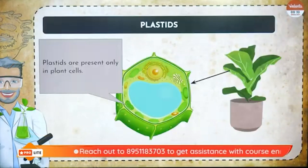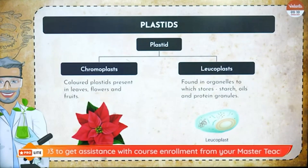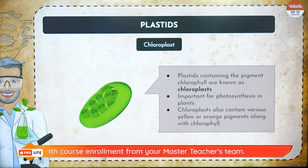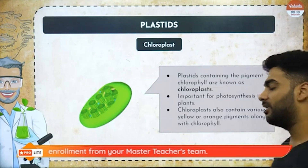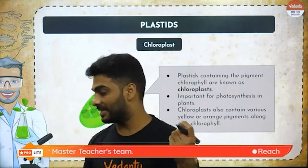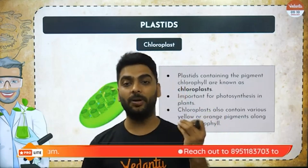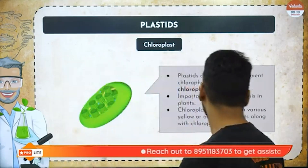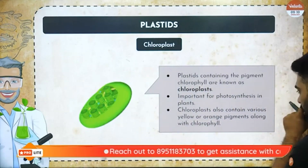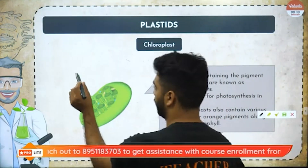Plastids are present only in plant cells. Leucoplast store starch, oil, protein granules. Chromoplast are the colorful ones. Now, regarding the structure of chloroplast — which is quite an expected exam question — chloroplast is a double membrane structure, and its structure is super important.